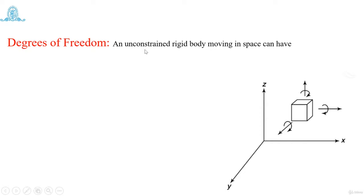When you have constrained motion, what does it mean? Constrained or completely constrained motion means it is attached to something, fixed to something, or having a relative attachment somewhere. But right now, the block is not attached anywhere — it is freely moving in space.